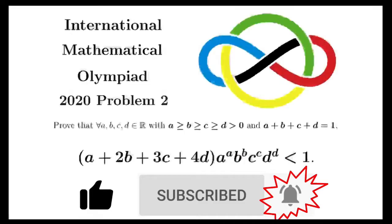So here's the problem. For all real numbers a, b, c, and d, which are all positive, and a is greater than or equal to b, which is greater than or equal to c, which is greater than or equal to d, and the sum being 1, we have to show that a plus 2b plus 3c plus 4d, times a to the a, times b to the b, times c to the c, times d to the d, is less than 1.